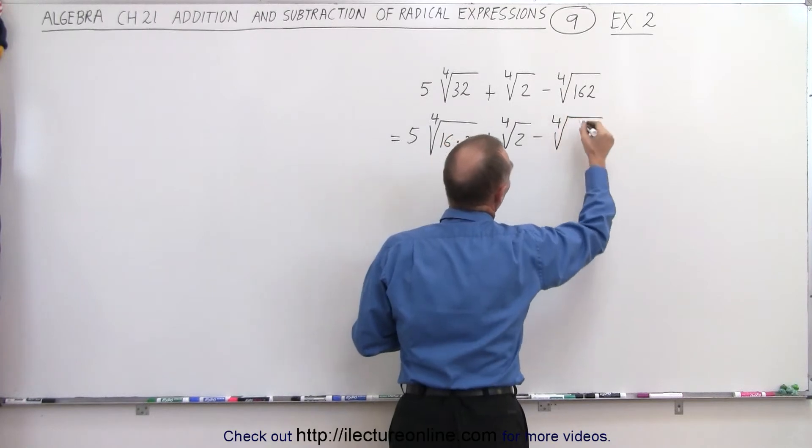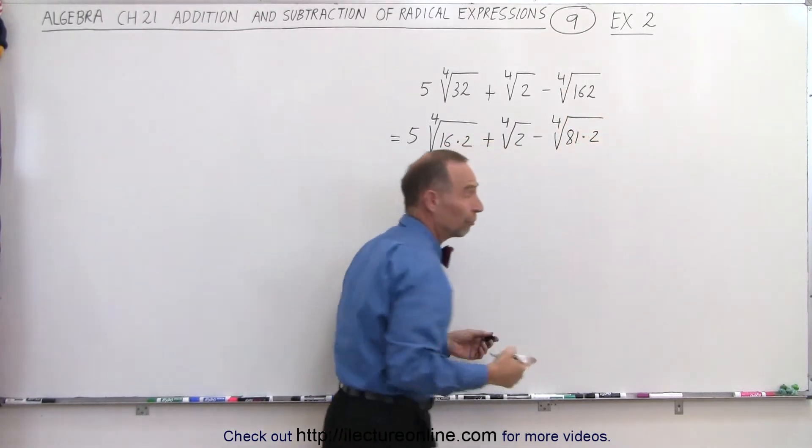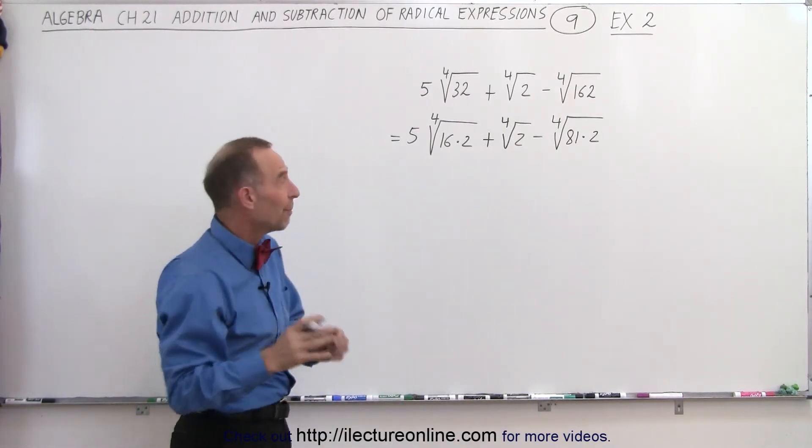And here again, I'm going to factor out a 2 and see what we end up with. So we get the fourth root of 81 times 2. And then I realize the fourth root of 81, that's equal to 3. And so now we have a path forward.